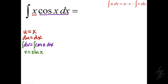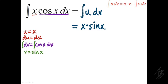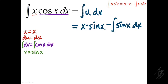It turns out that with this process we'll take care of the constant of integration at the very end. We know u, v, and du, so we can rewrite the integral using the formula. The integral of u dv equals u times v minus the integral of v du, which gives us x times sine of x minus the integral of sine of x dx.